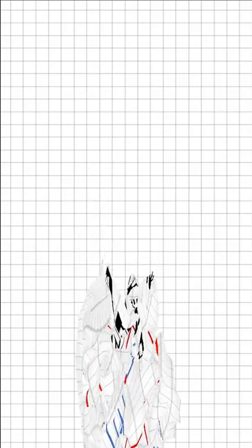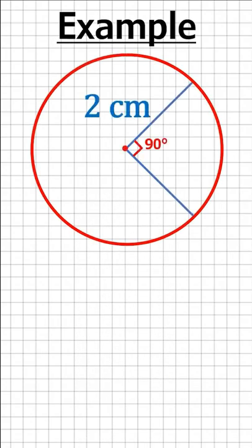Here's an example. We have a circle with a radius of 2 cm and a sector with an angle of 90 degrees.